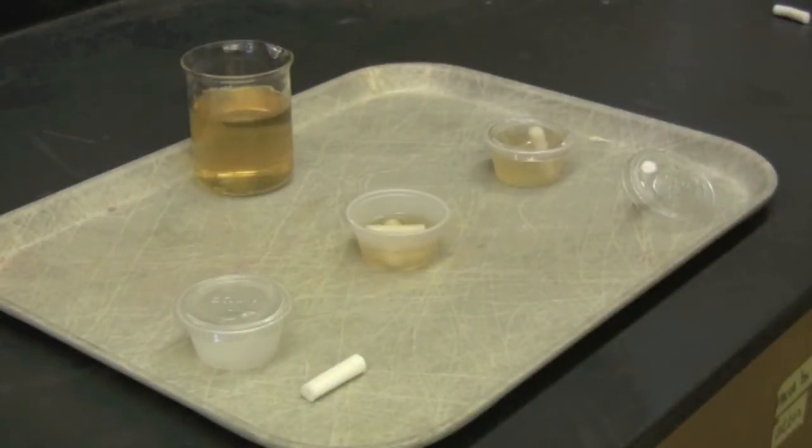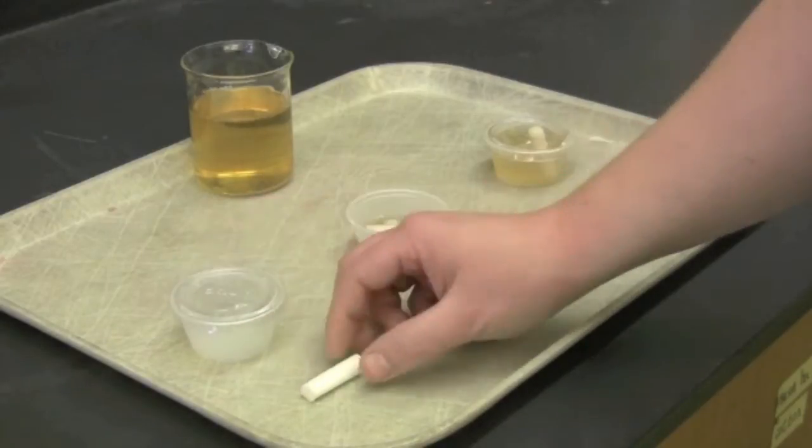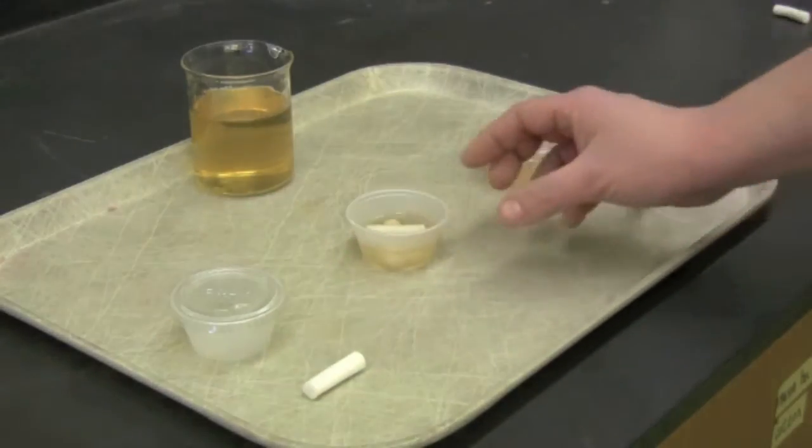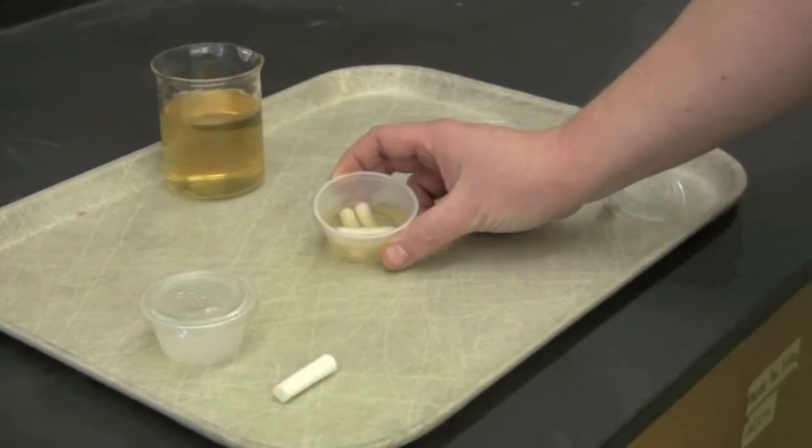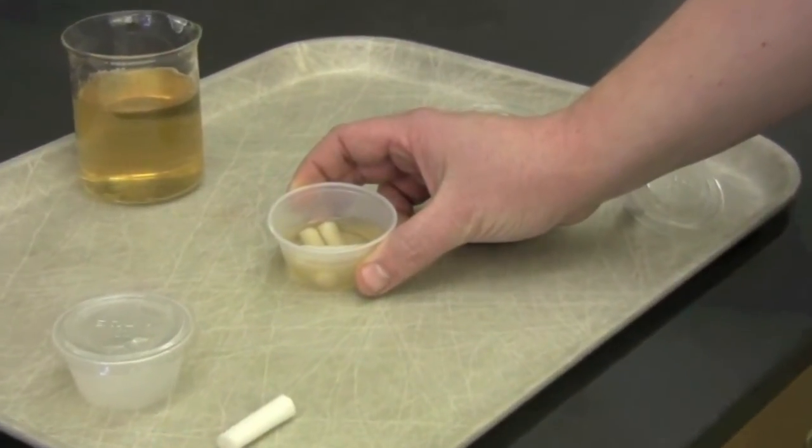To provide the nectar solution to your queen, you can use a small container that has a detachable lid and a cotton wick. What you want to do is take the cotton wicks and put them into another container that has the nectar solution and allow them to soak for approximately 10 minutes.